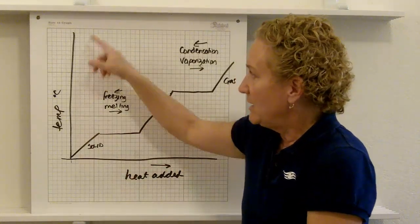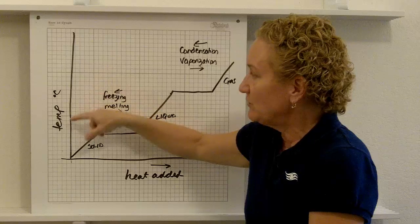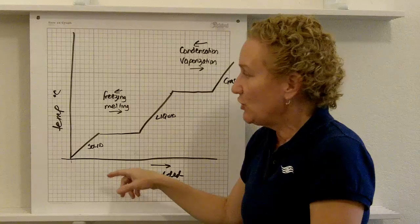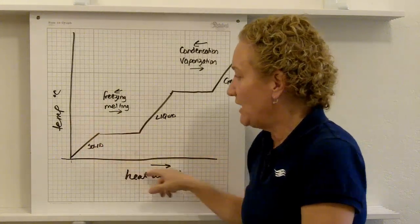It's going to give you a lot of information. On our y-axis we have the temperature in degrees Celsius and on the x-axis we have heat added. So we want to see what happens to temperature as we add heat.